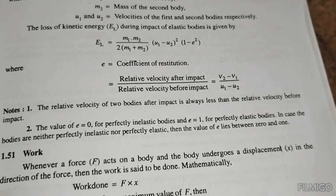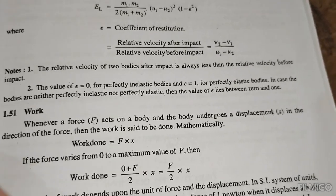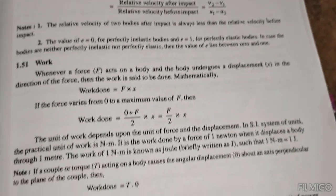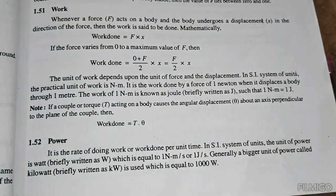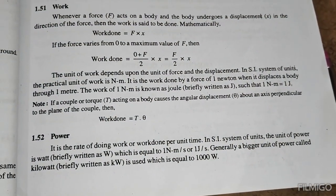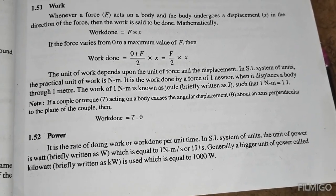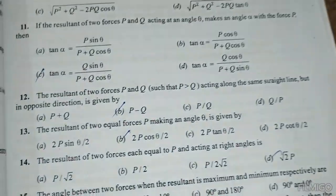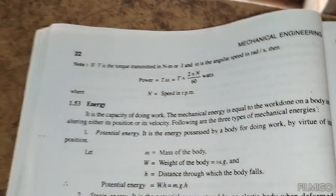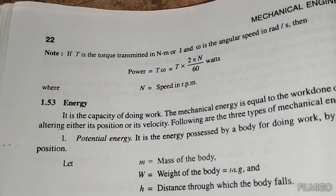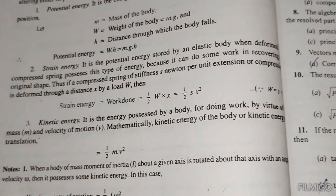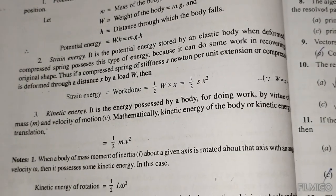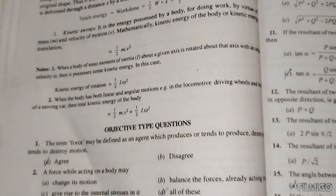The coefficient of restitution e equals relative velocity of separation divided by relative velocity of approach, which is v2 minus v1 divided by u1 minus u2. Work done equals force times displacement; work done against friction is F times x. Power P equals work done divided by time; 1 joule per second equals 1 watt. Power P equals T omega, or T times pi N divided by 60 watts.